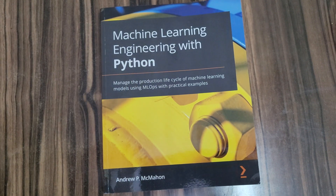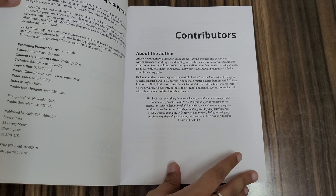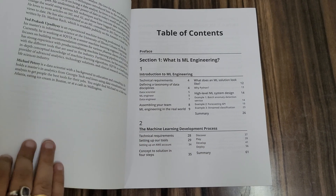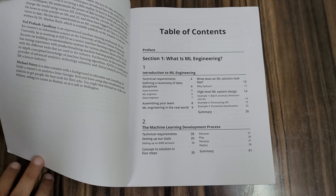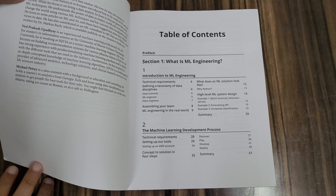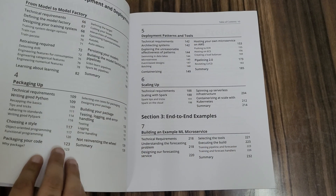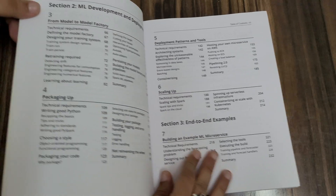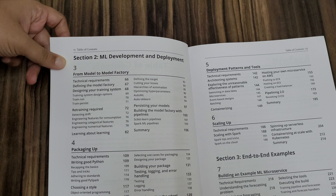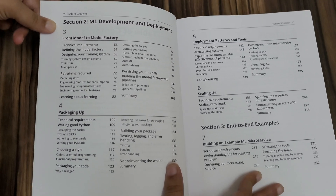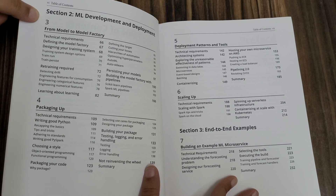Let me now show you the content of the book. You have various sections: an introduction to ML Engineering, the machine learning development process, machine learning development and deployment — how do you create models, how do you tune them, how do you create better models using AutoML, how do you create packages so that you can use them later on, what are the different deployment patterns and tools, and how do you scale up a particular model that you've deployed.